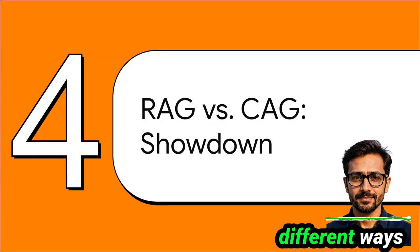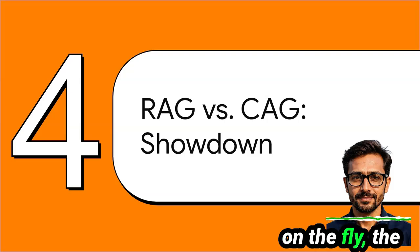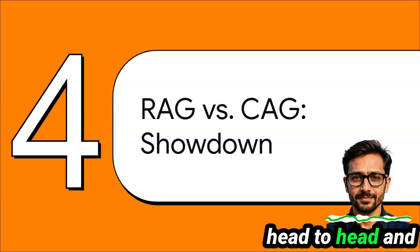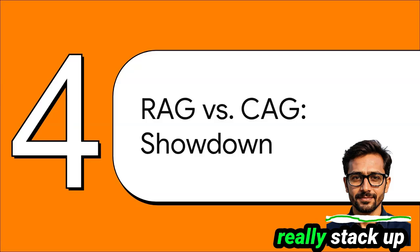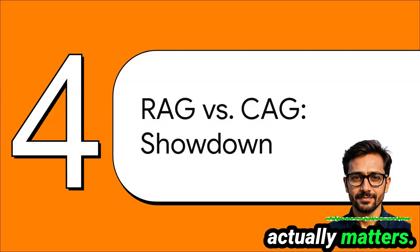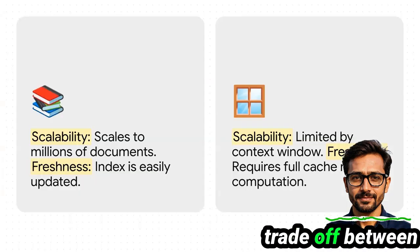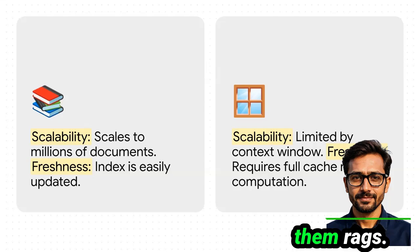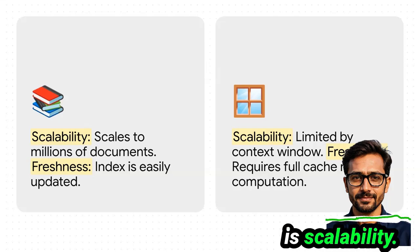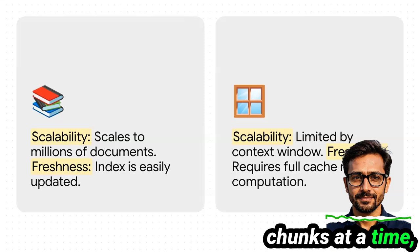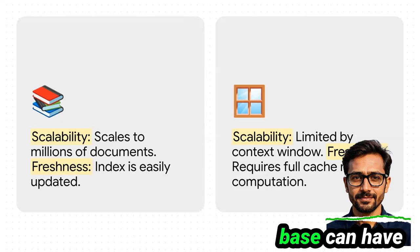So now we have two very different ways of doing things: one retrieves information on the fly, the other preloads everything. Let's put them head to head and see how they really stack up on the stuff that actually matters. This really gets us to the core trade-off between them. RAG's superpower is scalability — because you're only retrieving little chunks at a time, your knowledge base can have millions of documents. No problem.